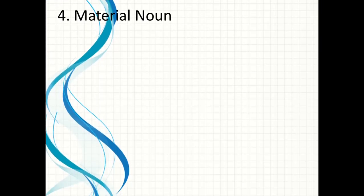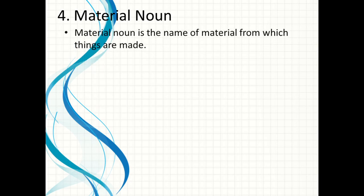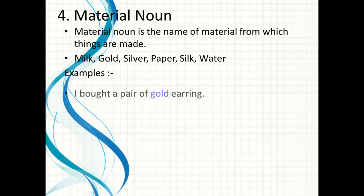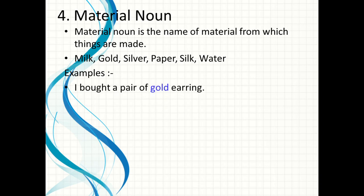Now next one is material noun. Material noun is the name of the material from which things are made, and that name is known as material noun. Examples of materials: milk, gold, silver, paper, silk, water. For example, 'I bought a pair of gold earrings' — earring kisi particular material se bana hai, and that material name is gold, so gold is a material noun.